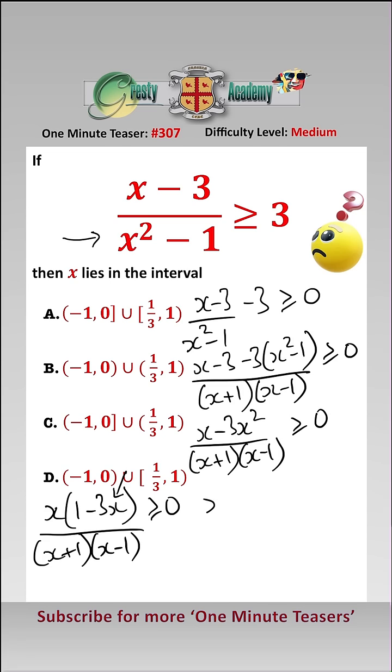We need now to multiply by minus 1 to flip this around, which gives us x times 3x minus 1 over x plus 1, x minus 1. And because we multiply by minus 1, we have to flip the sign to less than or equal to 0.